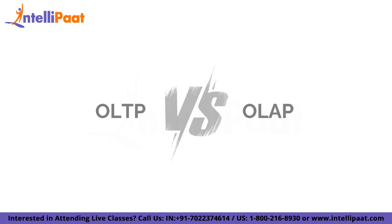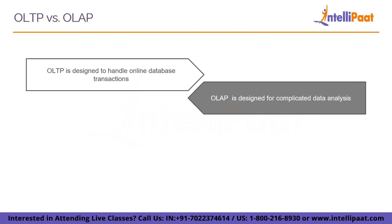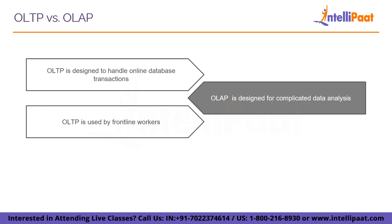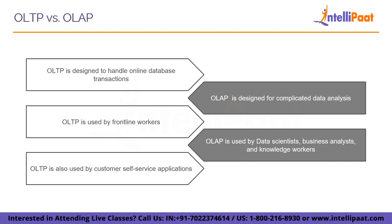Online Transactional Processing or OLTP is frequently mistaken for Online Analytical Processing, OLAP. Both have similar acronyms and are online data processing platforms, but that's about all they have in common. OLTP is designed to handle online database transactions, while OLAP is designed for complex data analysis. OLTP is used by frontline workers like cashiers, bank tellers, and clerks, as well as customer self-service applications like online banking, e-commerce, and travel reservations. OLAP is used by data scientists, business analysts, and knowledge workers to support business intelligence, data mining, and decision support applications.